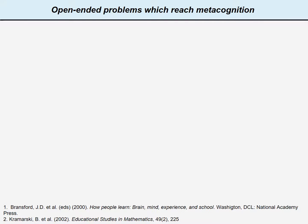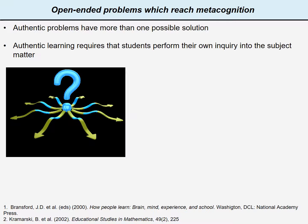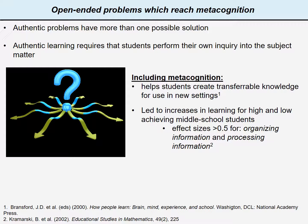The second component of authentic learning is that the activities are open-ended and include metacognitive learning. Authentic problems, like real-world problems, have more than one solution. Authentic learning requires that students perform their own inquiry into the subject matter. These activities include metacognition, which helps create adaptable knowledge for use in new settings.